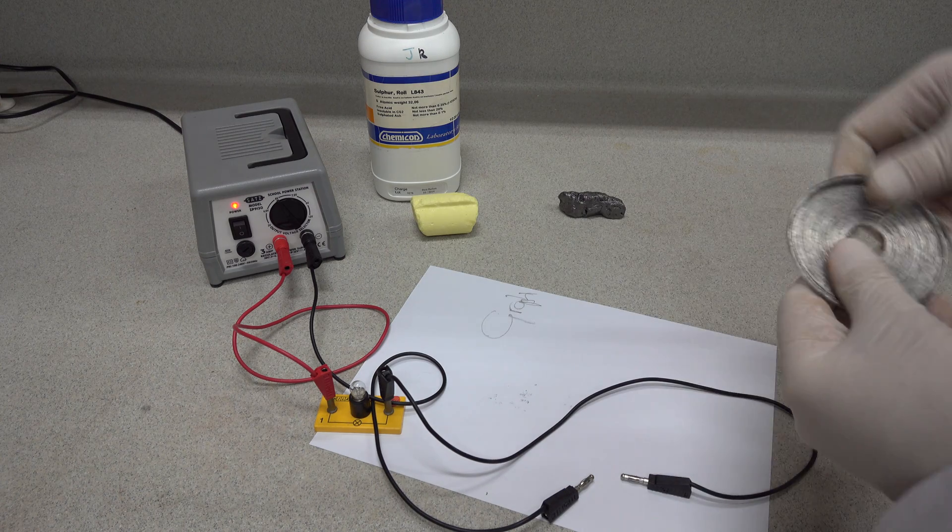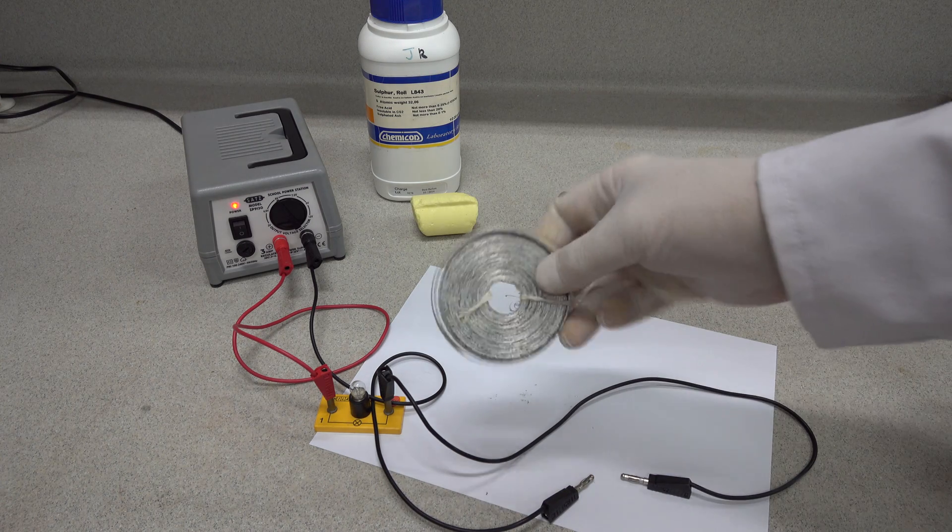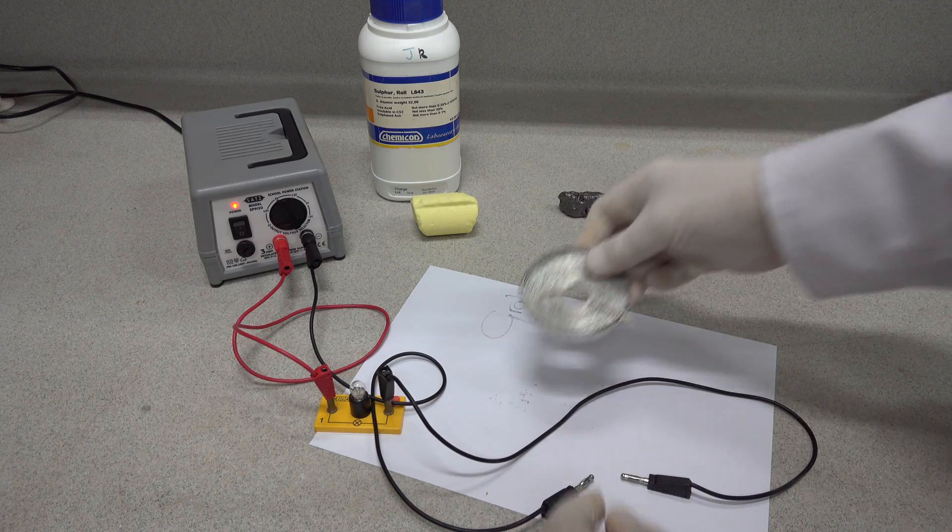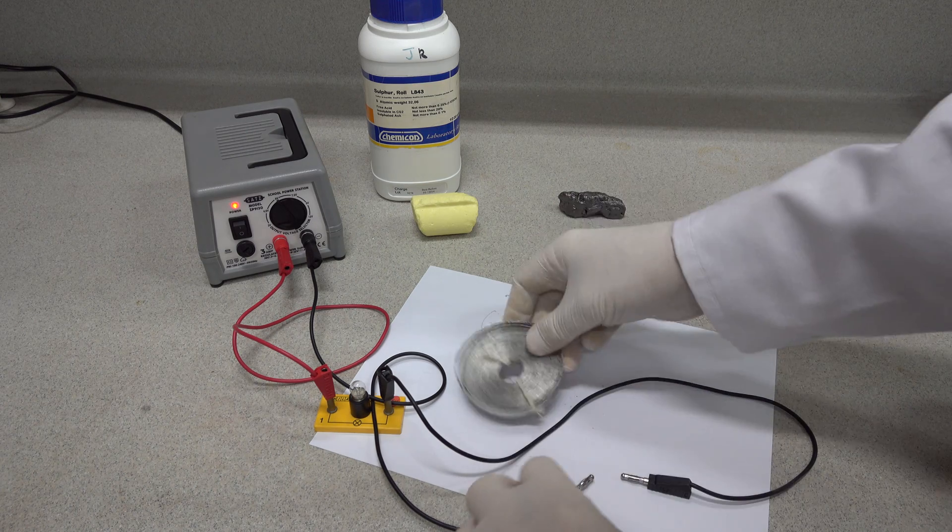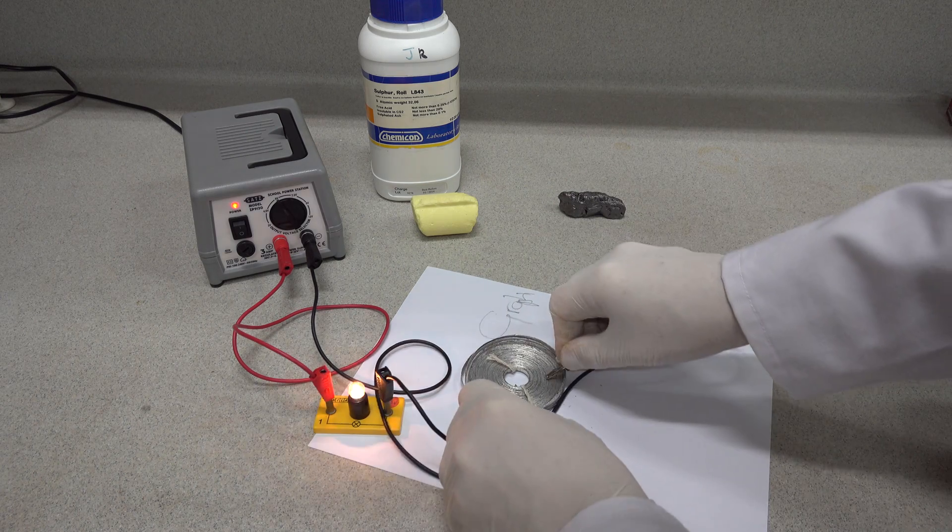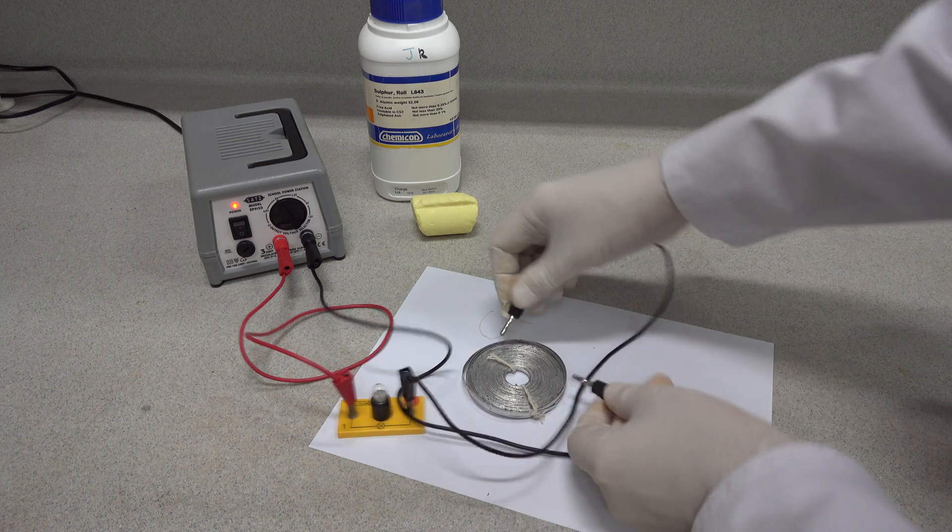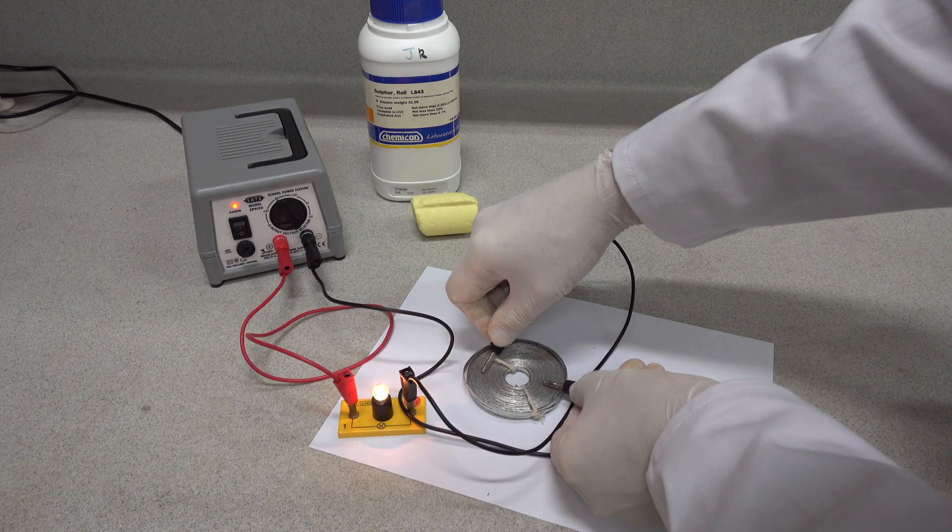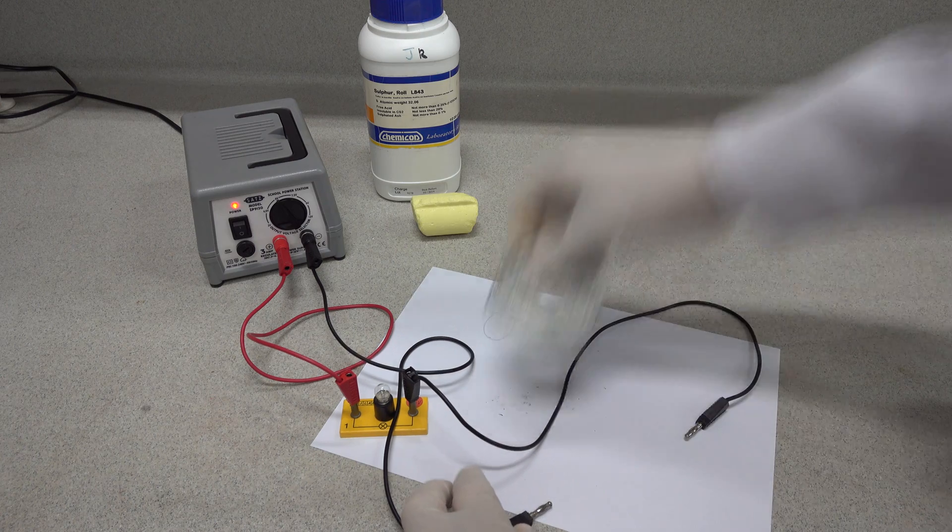On to our next element, which is a roll of magnesium ribbon. And if we put the electrical contacts onto the magnesium ribbon, yes, it conducts electricity again rather well.